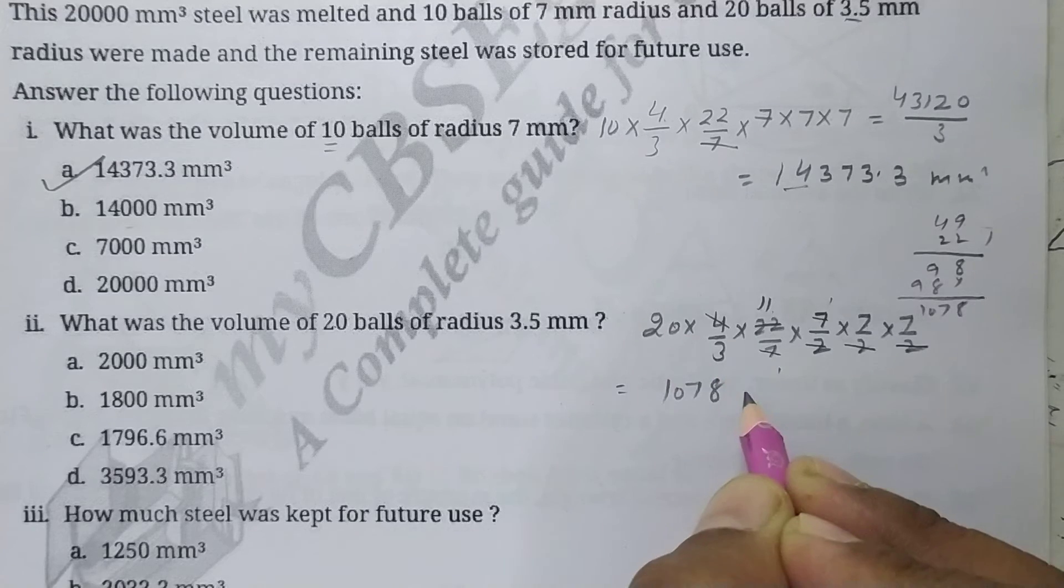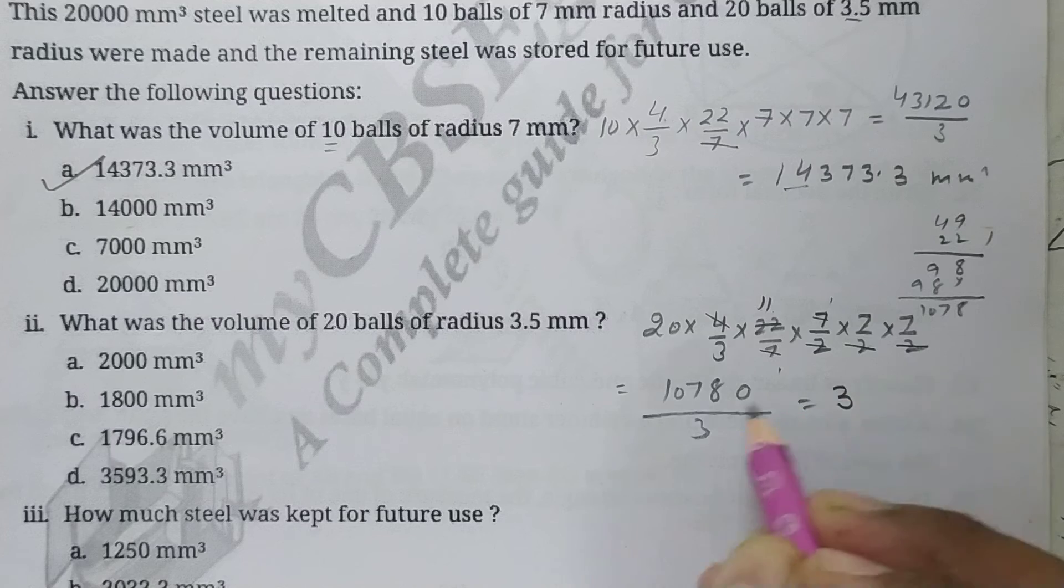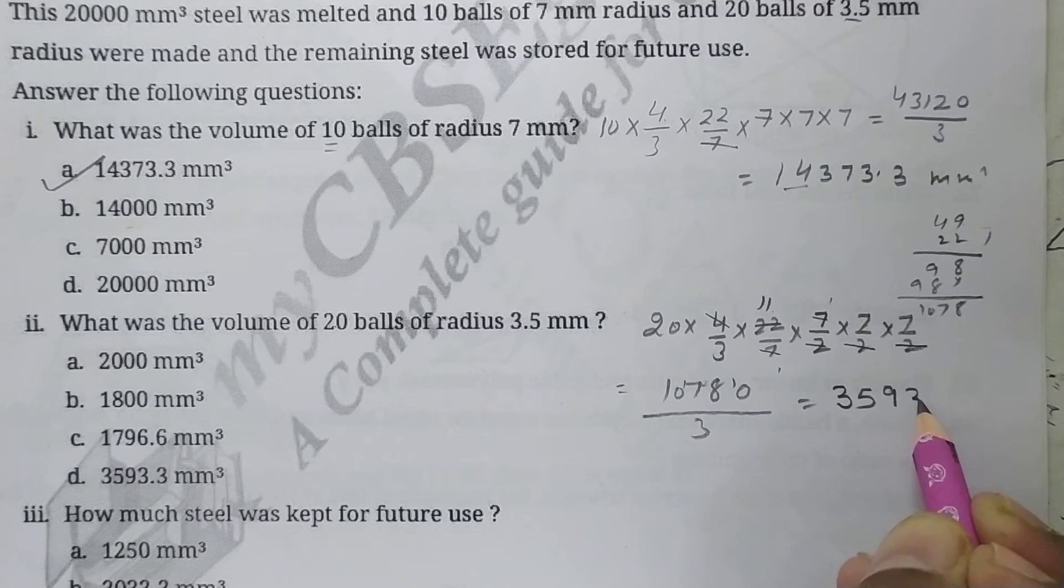1078, and 10 is also there, over 3. So let's see how much it comes. 3 threes are 9, 1 is left, 3 fives are 15, 2 is left, 3 eights are, 3 nines are 27, 1 is left, 3 threes are 9, 1 is left. So this is the correct option.